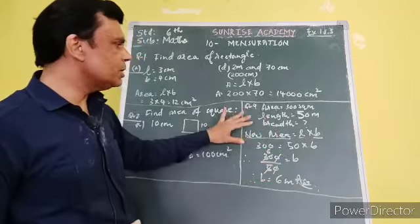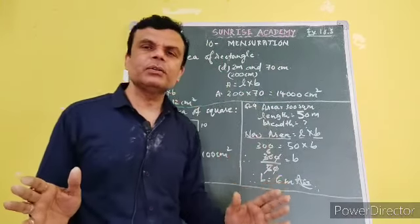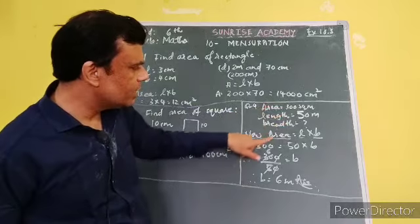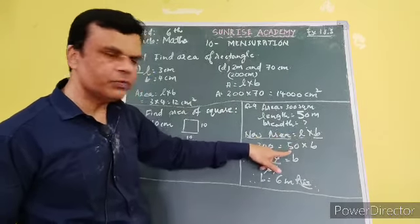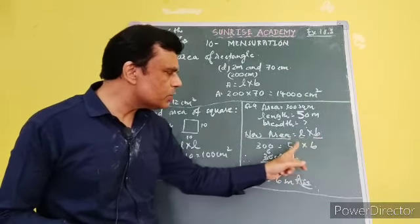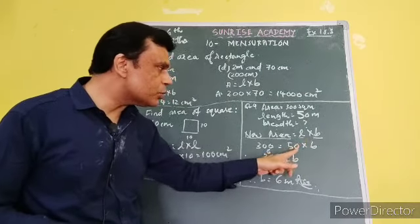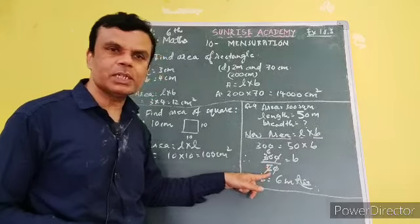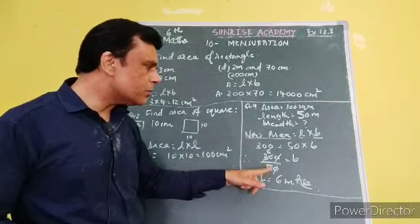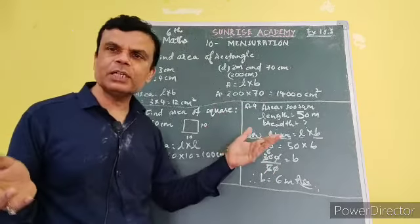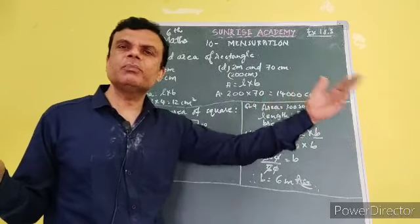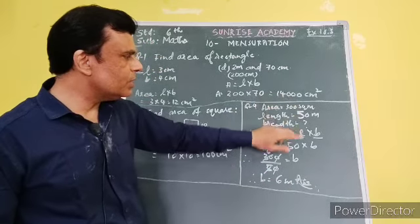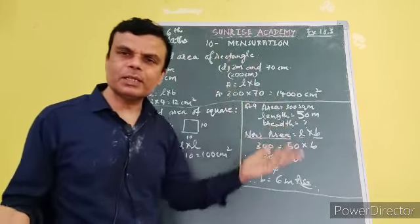So it's very simple. First of all, the formula for rectangle area is length into breadth. Now the area is given as 300. So 300 equals length 50 multiplied by breadth b. Now I want to find b. When I move the multiplication to the other side, it becomes division. So if you do 300 divided by 50, you will get 6. That means the breadth is 6 meters. So now I have length 50, breadth 6, 50 into 6 is again 300, so our answer is correct.